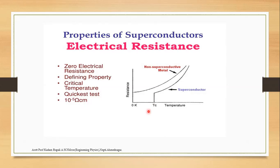That property is shown by mercury. Mercury, as an example, has a critical temperature of 4.2 Kelvin and shows superconductivity. Briefly defined: superconductivity means that at the critical temperature, resistance becomes zero.